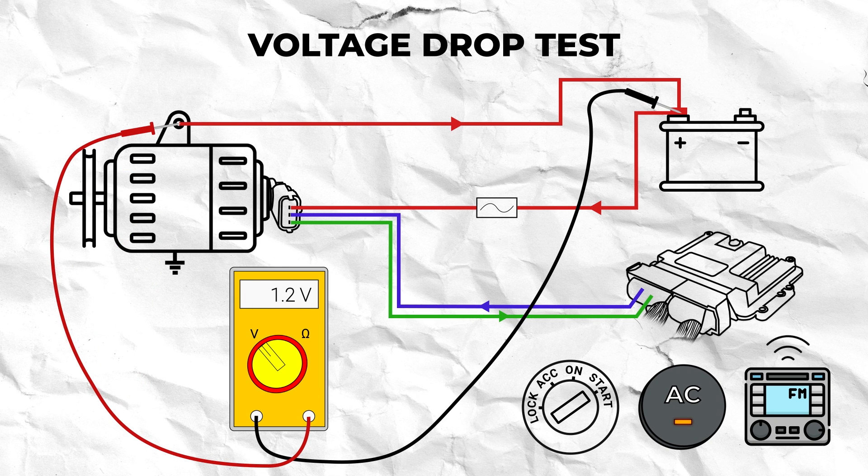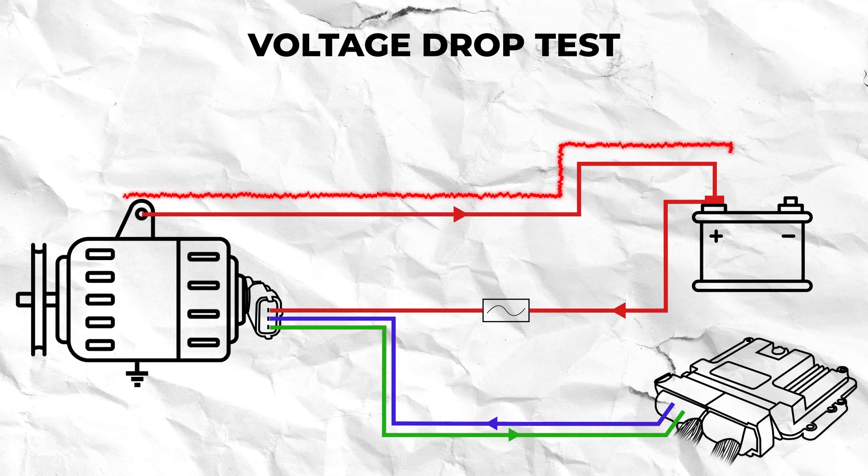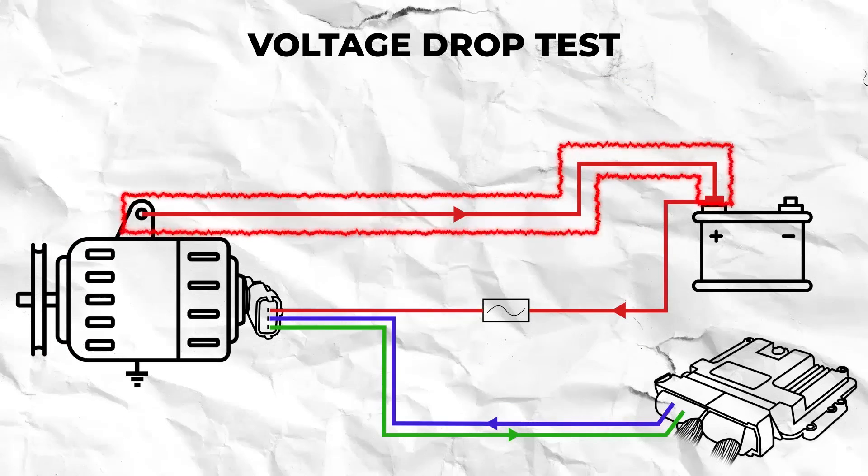To do this reconnect the connector to the alternator and turn the vehicle on and turn on as many accessories as possible. You shouldn't see a reading of over 0.2 volts but if you do then there is high resistance in the wiring from the alternator to the battery which will need to be repaired.